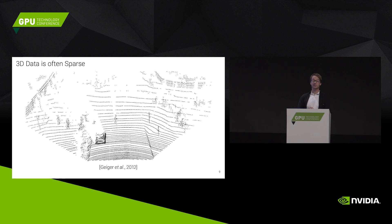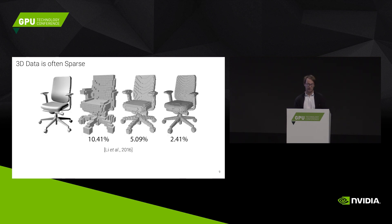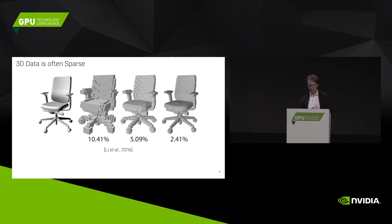One observation is that 3D data is actually often very sparse. It's not true for all data — for instance, not for medical images — but if you look at a point cloud from the KITTI autonomous car dataset, it's very sparse. Only a few points are actually occupied. Similarly, if you voxelize meshes at finer and finer resolutions, only about 2.4% of the voxels are actually filled, namely the voxels at the surface.